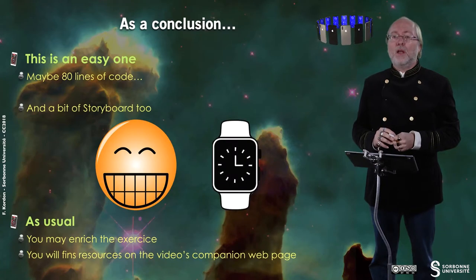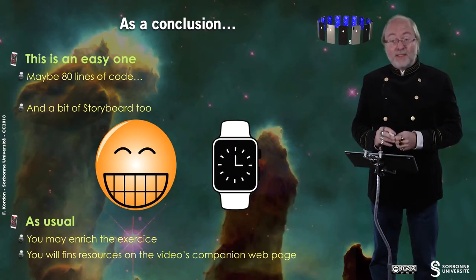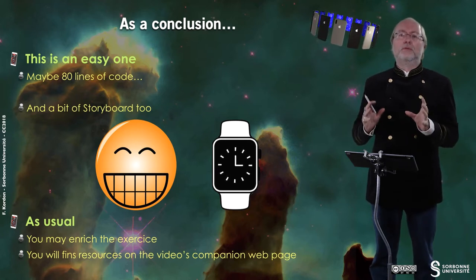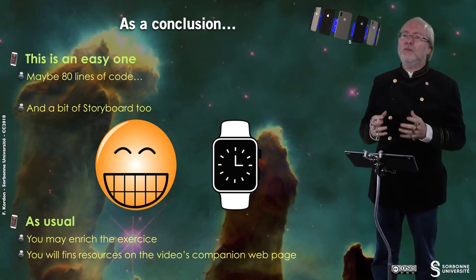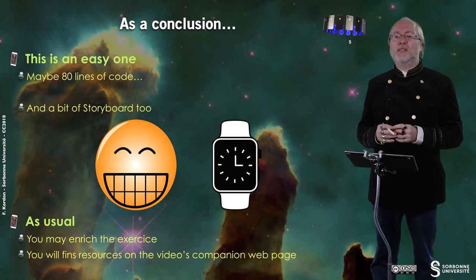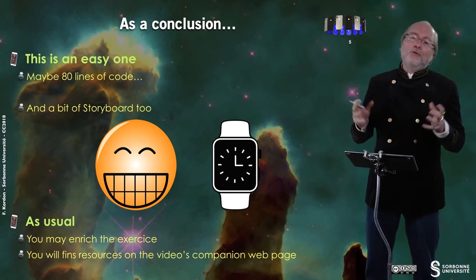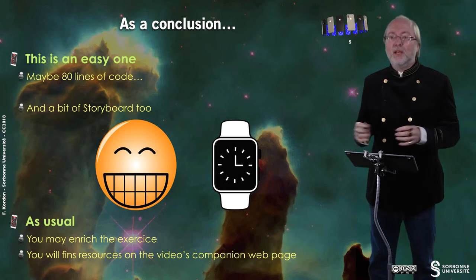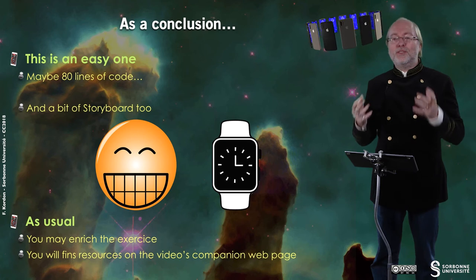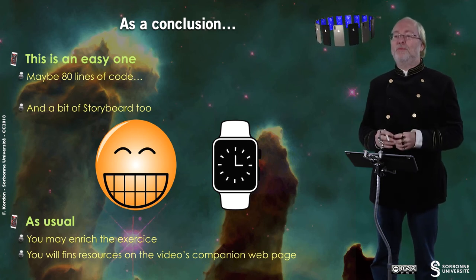You can then see how they interact together. It's not very difficult — to be honest it's about 80 lines of code, so not very much. You have to think a bit about it, but it's 80 lines of code in addition to the previous version of this exercise. You also have to do a very small bit of storyboard. As usual, you may enrich the exercise, and as usual you will find resources on the Video Companions web page. Have fun with your watch. Thank you for your attention. See you later.